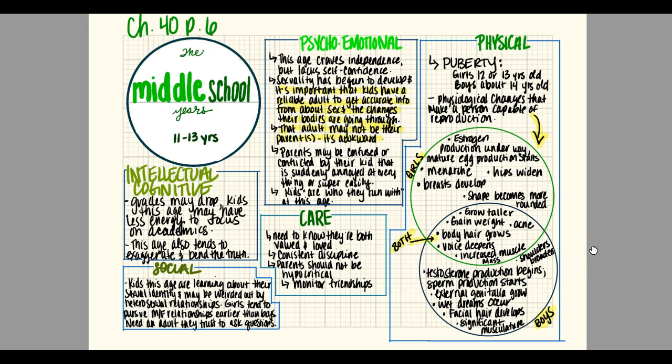For care during the middle school years, kids need to know that they are both valued and loved. They need consistent discipline, and parents should not be hypocritical. Kids this age are very impressionable. It is important to monitor friendships — because kids are who they run with, you don't want your kid hanging out with all the rowdy kids and becoming a rowdy kid.